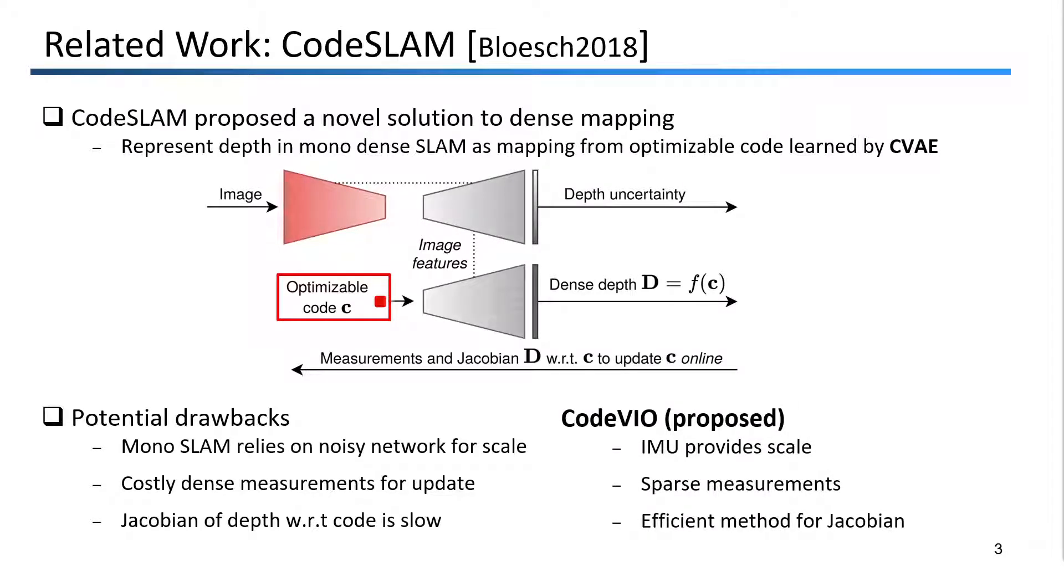In contrast with CodeSLAM, the IMU provides accurate scale to the system. We only use sparse measurements to update the dense depth, and I will show later on that the depth quality can still be greatly improved. Finally, we have found a new way to calculate the decoder network Jacobian, which is much more efficient than the method proposed by CodeSLAM. So now let's talk about just how exactly we are doing these things.